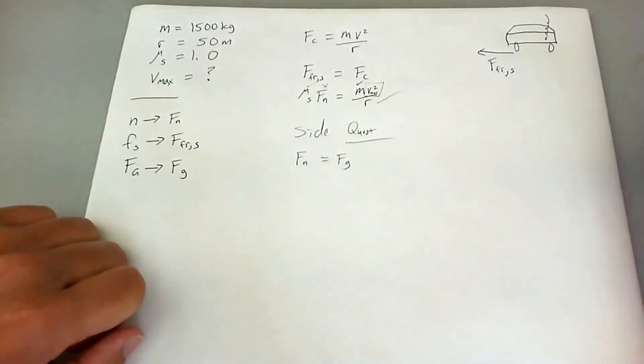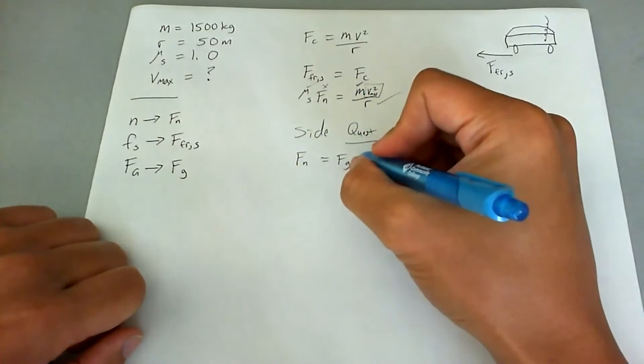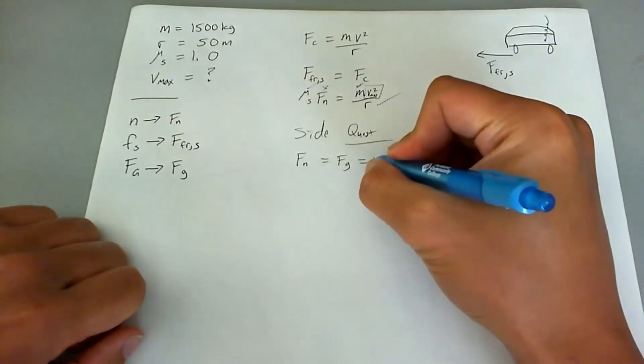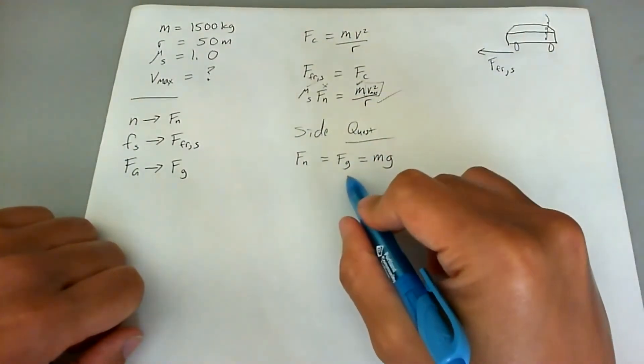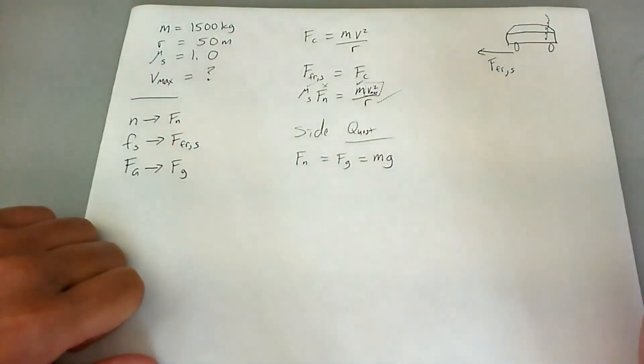So we'll know that the normal force is just going to be m times g, which is the equation of gravitational force.